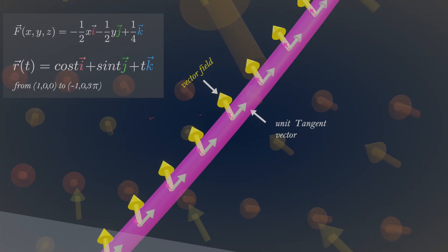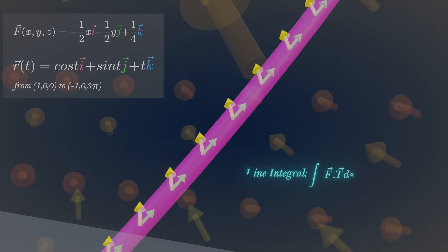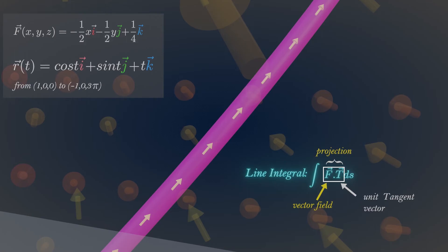Projecting this vector field in the direction of unit tangent vectors of our curve is a dot product. By doing so, we can get the tangential component of forces on every point.